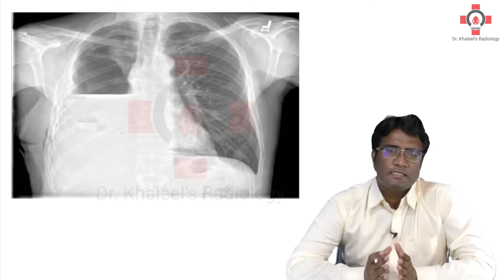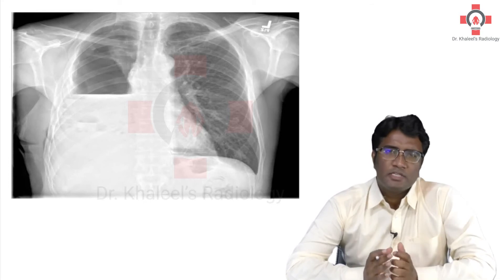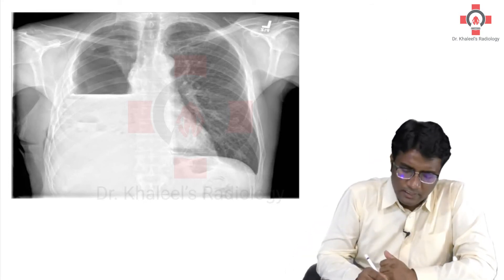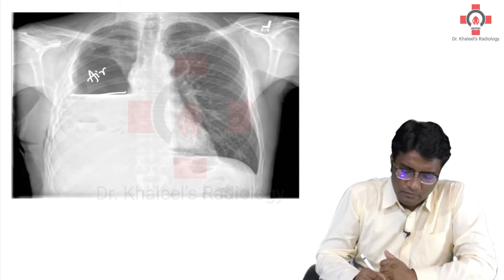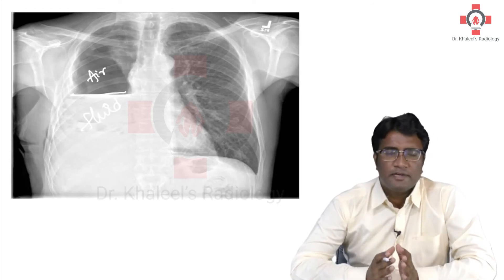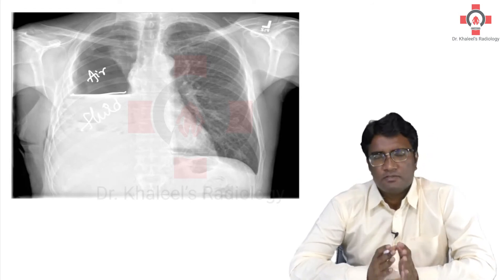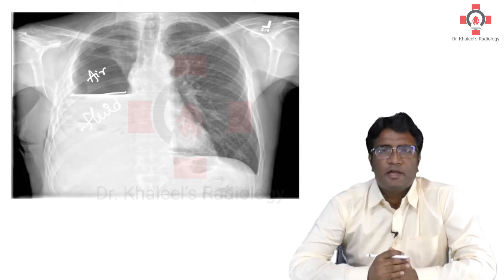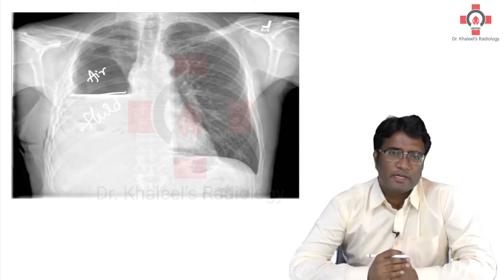Now, what do you think this chest X-ray finding is showing you? This chest X-ray finding is showing you a horizontal air-fluid level. This is the air and this is the fluid. You are seeing a horizontal air-fluid level in the right hemithorax. So this is hydropneumothorax.